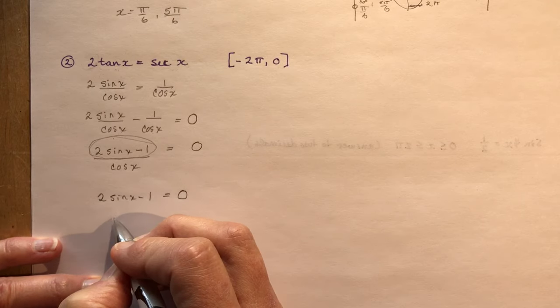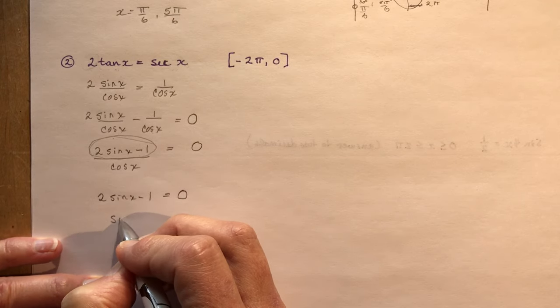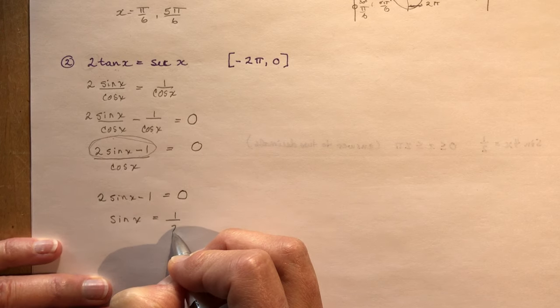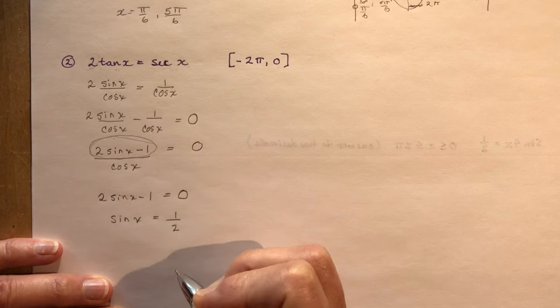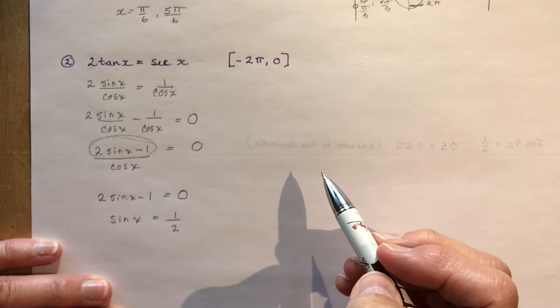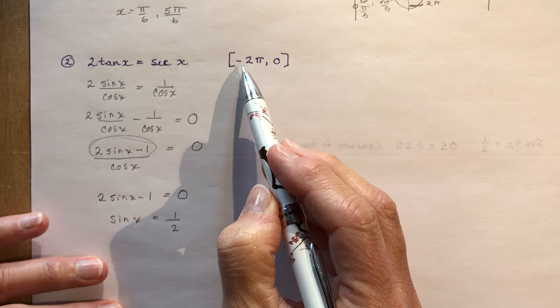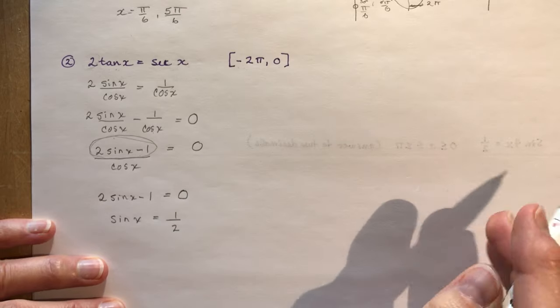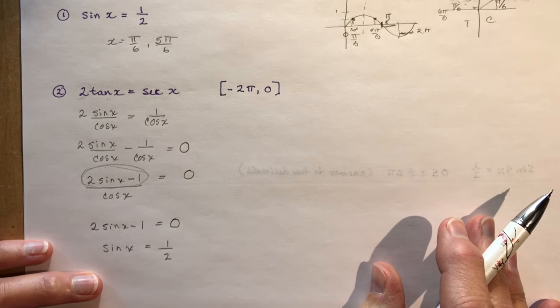And now I'm going to throw everything back to the other side of the equation. So I just have sin x equals 1 half. Okay, so I'm back to the same question we had above, except the domain this time is between minus 2π and 0.